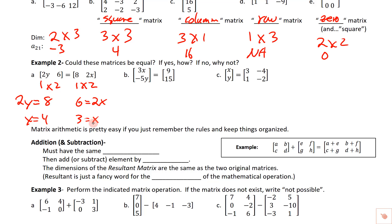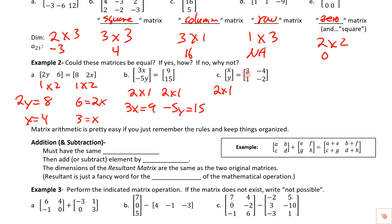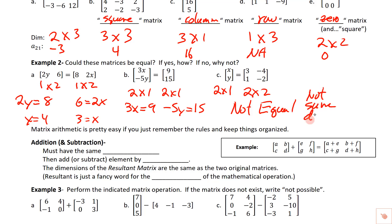So these would only be equal if y equals 4 and x equals 3. The next pair — both two-by-one — could be equal. The only way is element by element: 3x would have to equal 9, and negative 5y would have to equal 15. The last pair has two rows and one column versus two rows and two columns — not the same dimensions, so they cannot be equal.